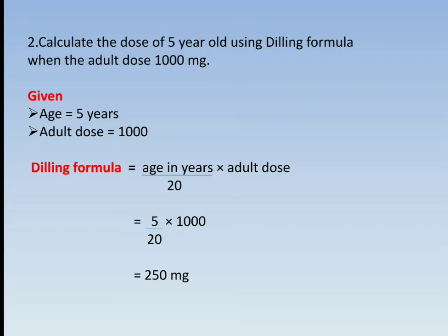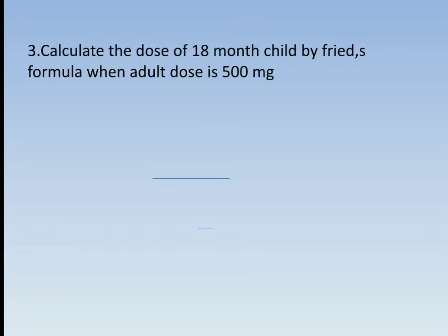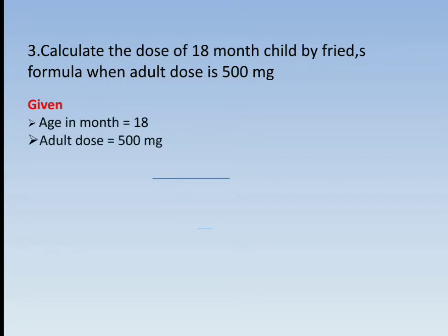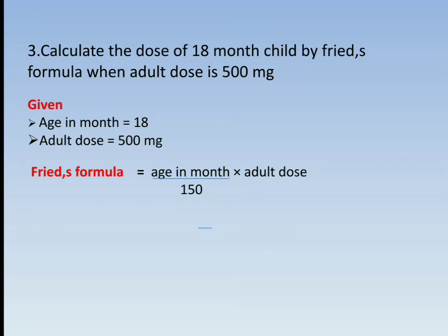The next question: Calculate the dose of an 18-month-old child by Fried's formula when the adult dose is 500 mg. Given: Age = 18 months, Adult dose = 500 mg. Fried's formula: Child dose = (Age in months × Adult dose) / 150 = (18 × 500) / 150 = 60 mg.